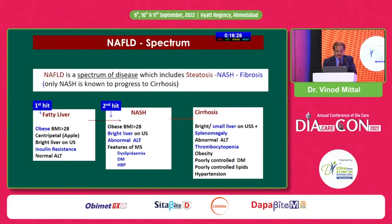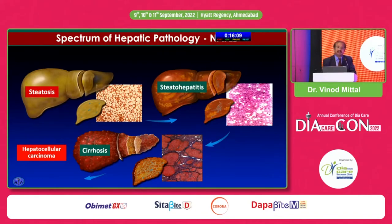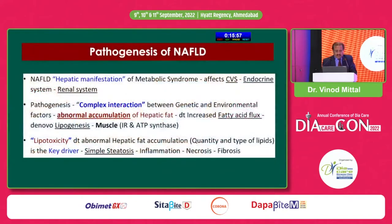So we see some patients progress from initial steatosis to steatohepatitis, which is NASH, leading to cirrhosis and then hepatocellular carcinoma. One important point to remember: NAFLD is totally reversible in the initial stages. We can avoid not only cardiovascular disease and CKD, but also hepatocellular carcinoma with early intervention.